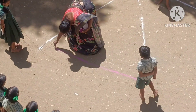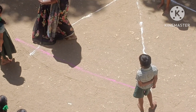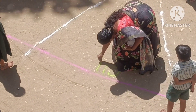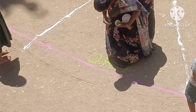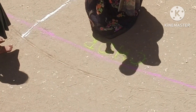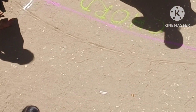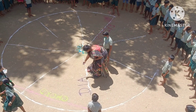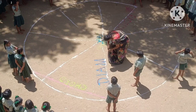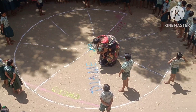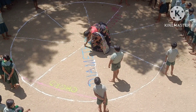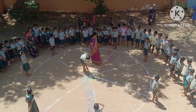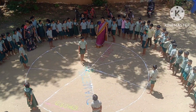The line segment which joins any two points on the circle is called a chord. The chord which passes through the center of the circle is a diameter of the circle. Diameter is the longest chord. Half of the diameter is always the radius.